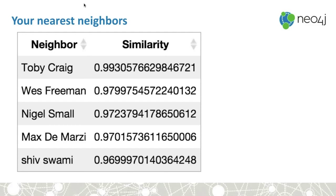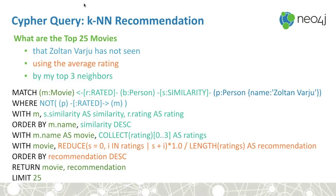Let's use that to build an actual movie recommendation — the KNN recommendation. We're going to find the top 25 movies a user has not seen yet, and take the average rating of the top three neighbors as a recommendation. We find people similar to Zoltan where Zoltan has not seen movies that these people have seen. We collect the top three neighbors' ratings using collect(rating)[0..3], add up their ratings, and do a division. That's our recommendation result — eight or nine lines of Cypher.